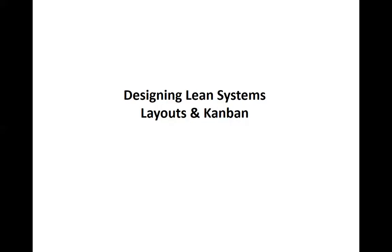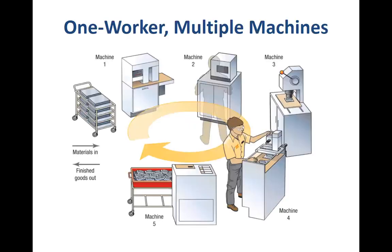Hello and welcome. In this presentation I'll discuss some of the ways to design lean systems layouts and the idea of kanban signals. One of the ways in which lean systems operate is by using one worker multiple machines — a cellular layout. Here there is one worker who is managing multiple machines, and essentially each machine makes or does something on a particular product.